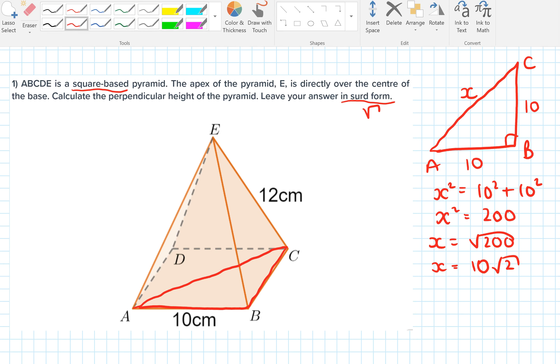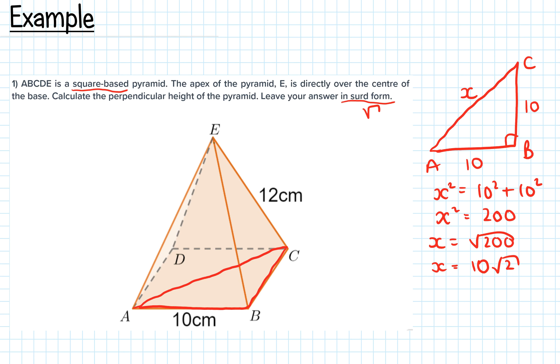Now you've got to imagine that you're going to take this from E and drop it right down. It said that was directly over the center of the base, so where that drops - that's called M - is exactly halfway along this side AC.